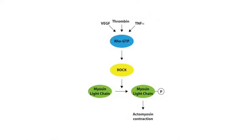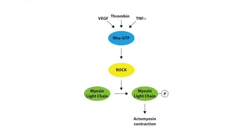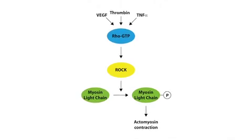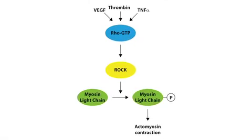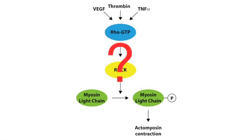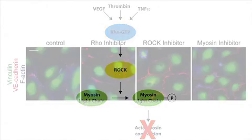Factors like VEGF and thrombin induce junction remodelling by activating the Rho-GTPase to stimulate contraction of the actin and myosin cytoskeleton. To see whether actomyosin contractility was required for the formation of focal adherence junctions, Hüveniers et al. blocked Rho signaling by inhibiting either Rho itself, its associated kinase ROCK, or myosin II.